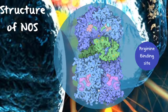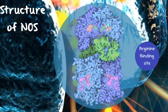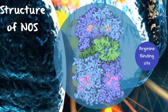Calmodulin, shown in green, binds between the two domains and facilitates the flow of electrons from the reductase domain to the heme in the oxygenase domain. A functional NOS transfers electrons from NADPH via the flavins FAD and FMN in the reductase domain to the heme in the oxygenase domain. The oxygenase domain also binds the essential cofactor BH4, molecular oxygen, and the substrate L-arginine at the heme site. The electrons are then used to reduce and activate oxygen and to oxidize L-arginine to L-citrulline and nitric oxide.